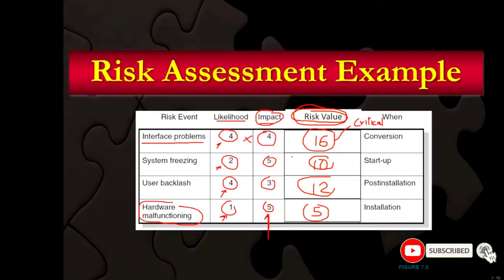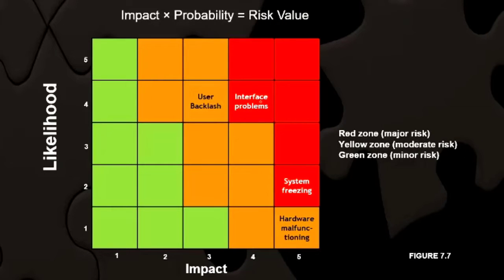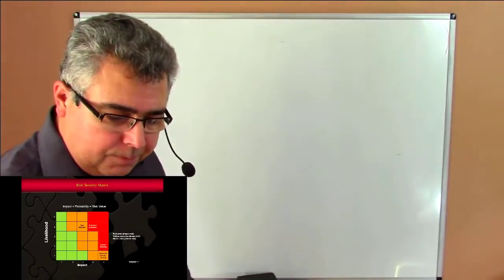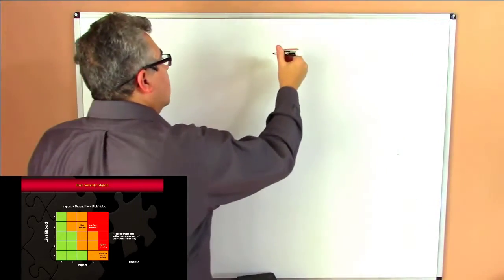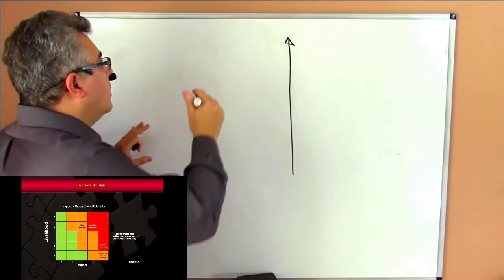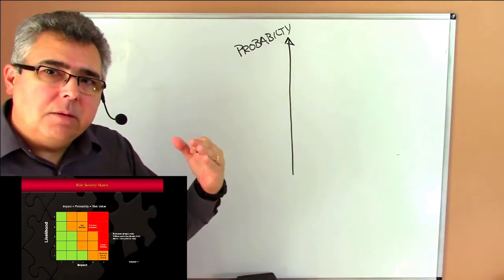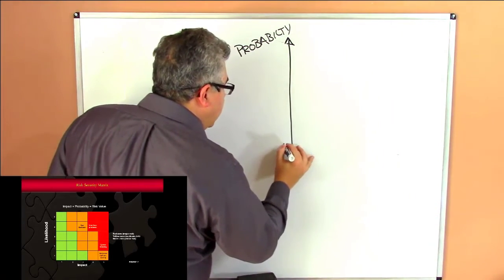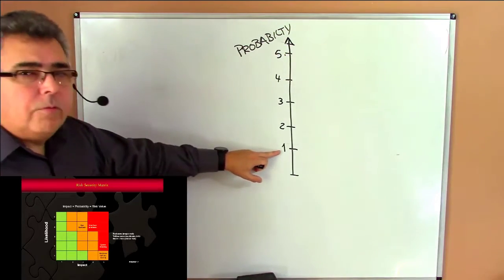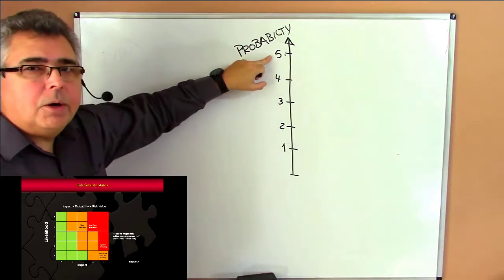How to show those things to a customer in a simple way that a customer can understand — we use a diagram called the risk severity matrix. What is a risk matrix? We put two dimensions on the chart. We draw a vertical line that shows the probability level: very high, high, medium, low, or very low probability. This is related to the probability score: very low probability = score 1, low = score 2, medium = score 3, high = score 4, very high = score 5.